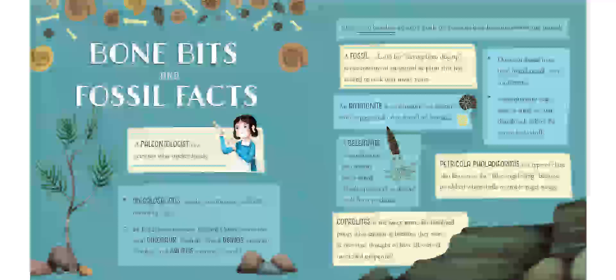Dinosaur fossils have been found on all seven continents. Some dinosaur eggs were as small as your thumbnail. Others were the size of basketballs.